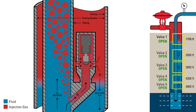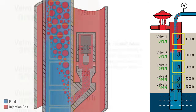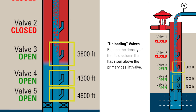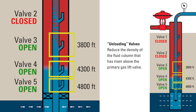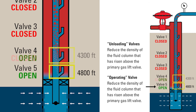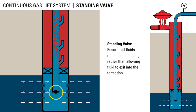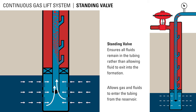There are additional gas lift valves installed at intervals below the surface. At the beginning of production, these unloading valves are used to reduce the density of the fluid column that has risen above the primary gas lift valve. This operating valve is injecting gas at the deepest point in the wellbore. This process is referred to as well kickoff or well unloading. The standing valve ensures all fluids remain in the tubing rather than allowing the fluid to exit into the formation. However, like a check valve, the standing valve allows gas and fluids to enter the tubing from the reservoir.